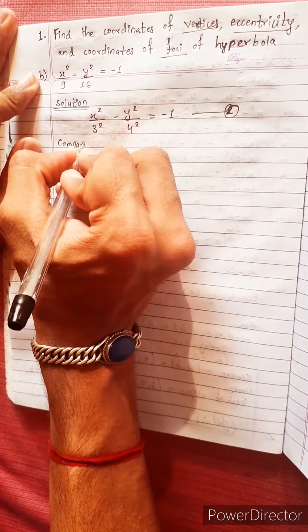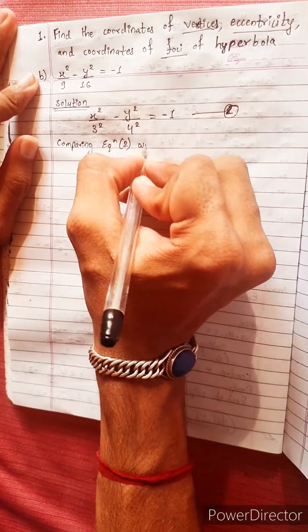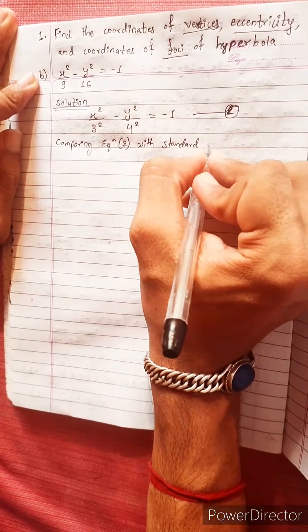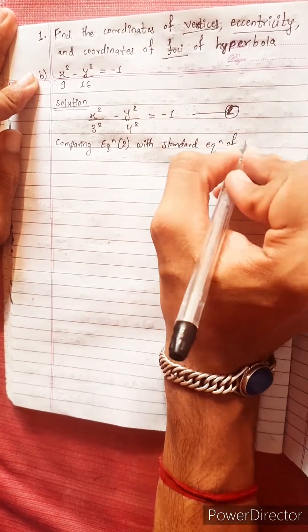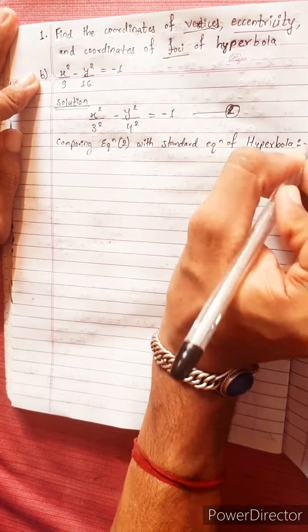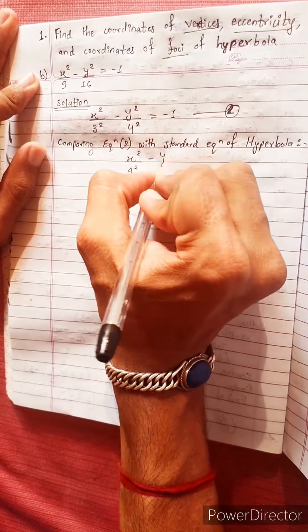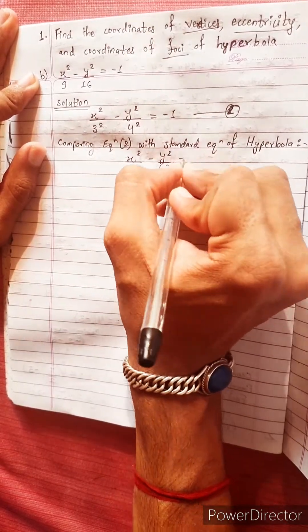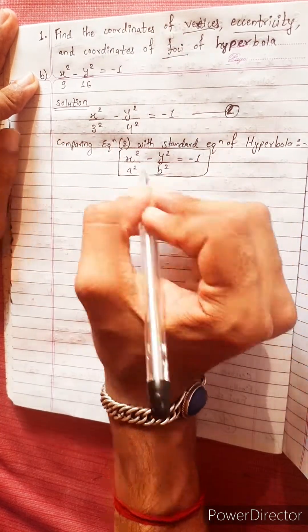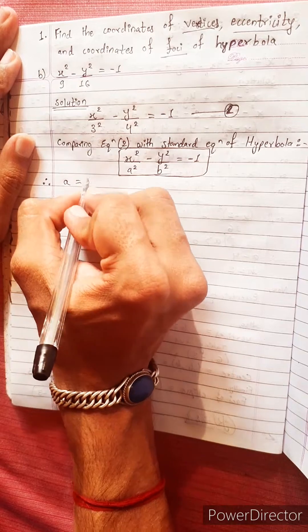Comparing equation 1 with the standard equation: x squared divided by a squared minus y squared divided by b squared equals minus 1. Comparing, we get a squared equals 3 squared, so a equals 3.